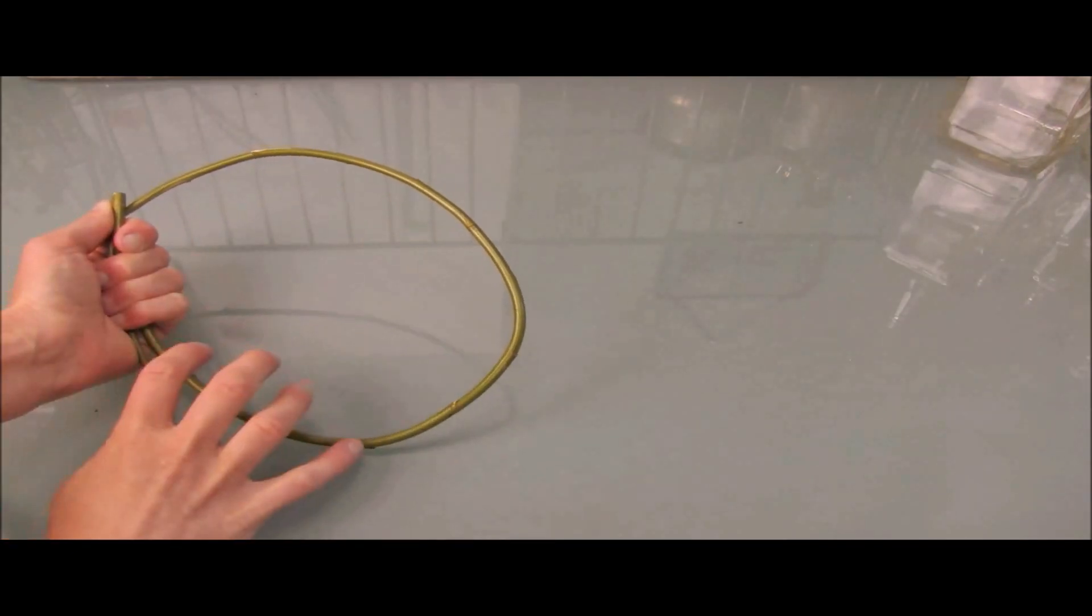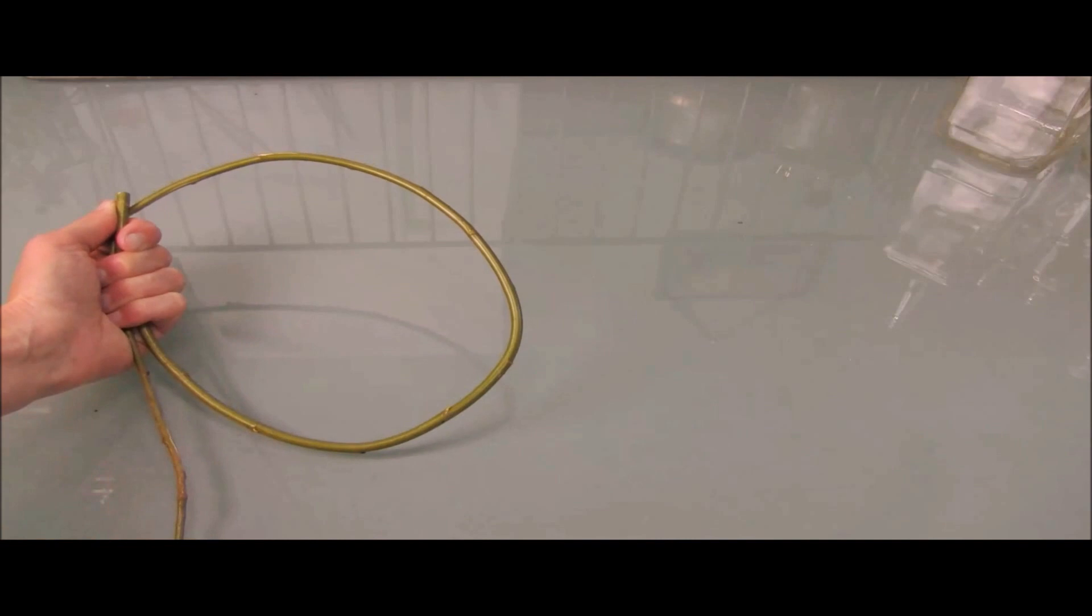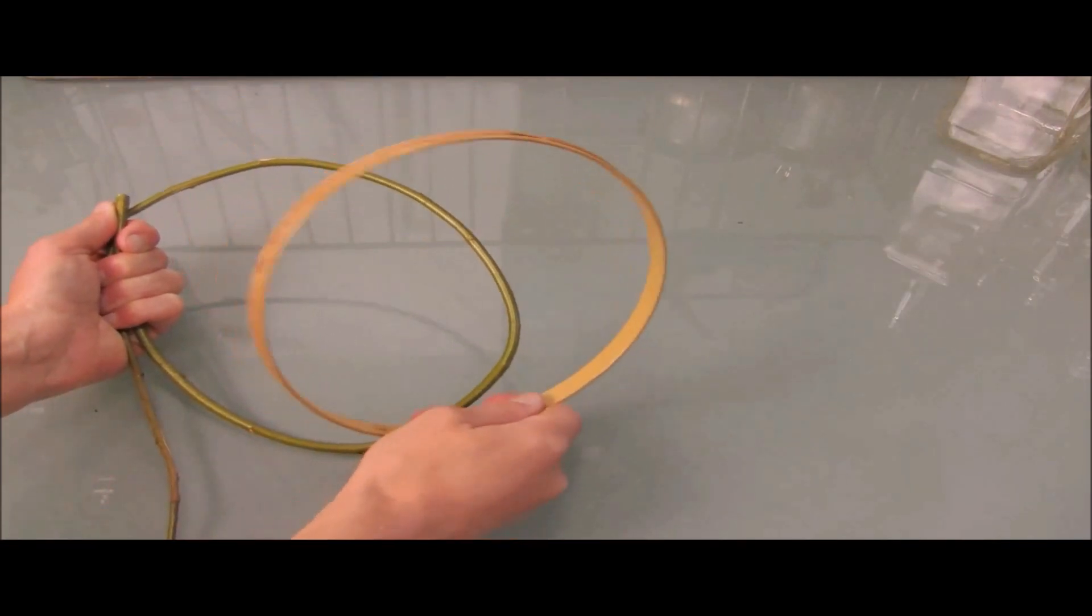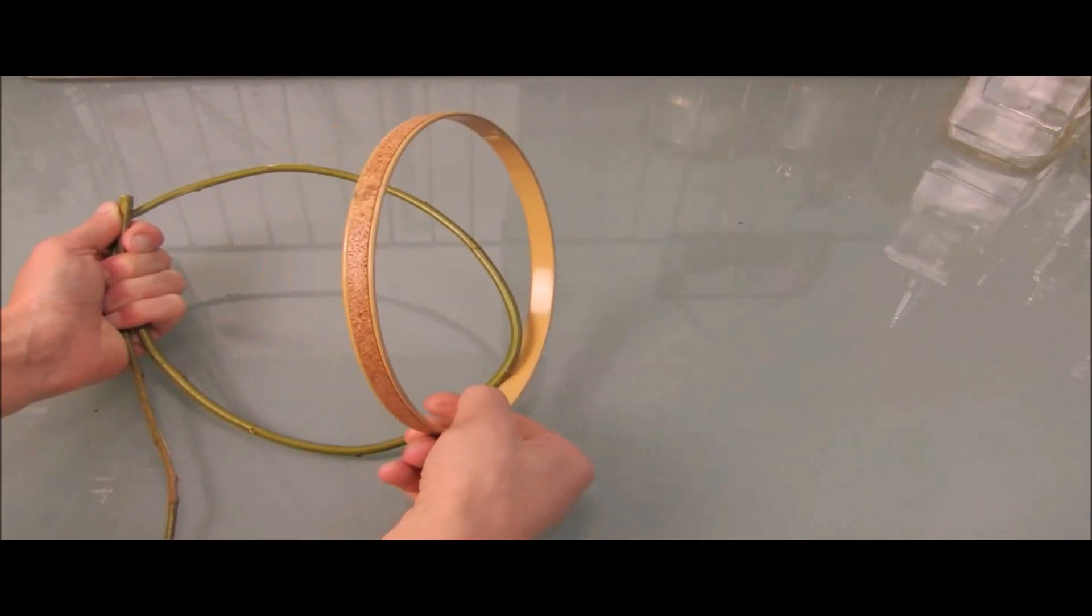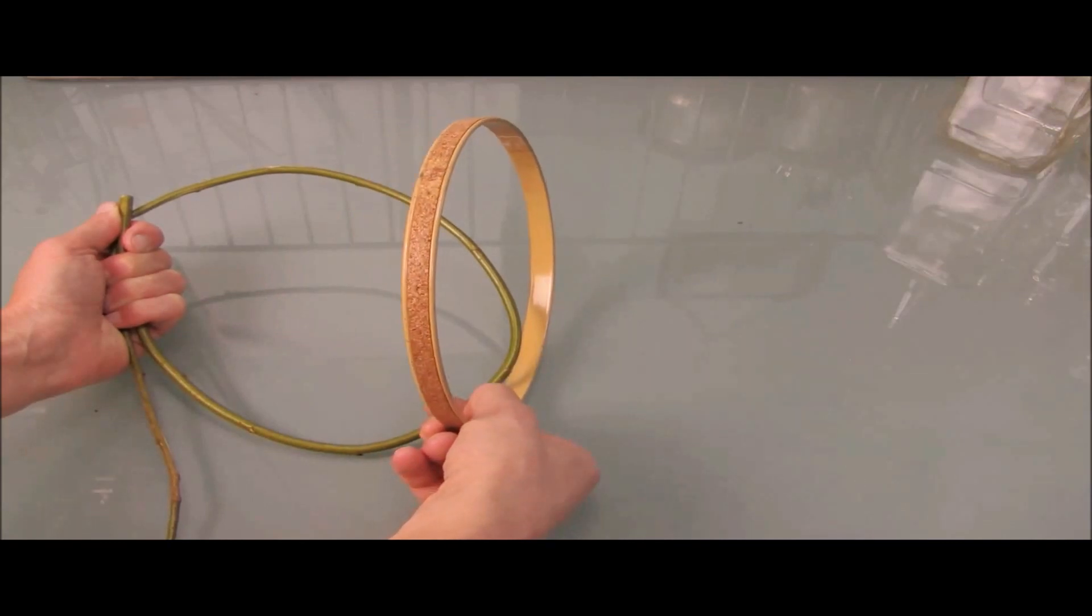The other option, if you don't want to use willow, if you don't want to try and be that authentic, is you can use an embroidery hoop, and that's super easy. This is actually a vintage metal embroidery hoop with a cork liner around the outside.